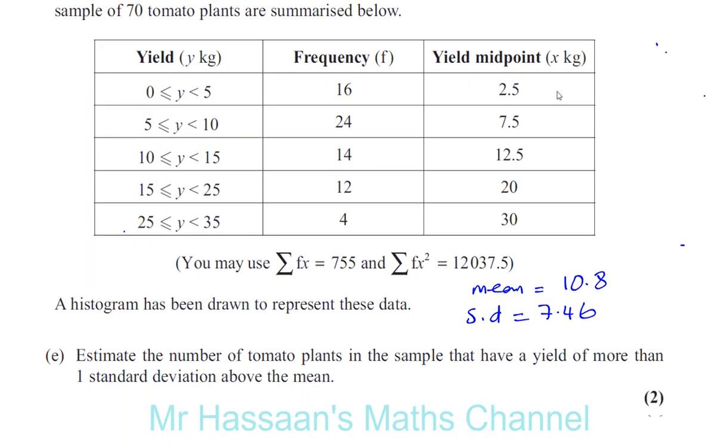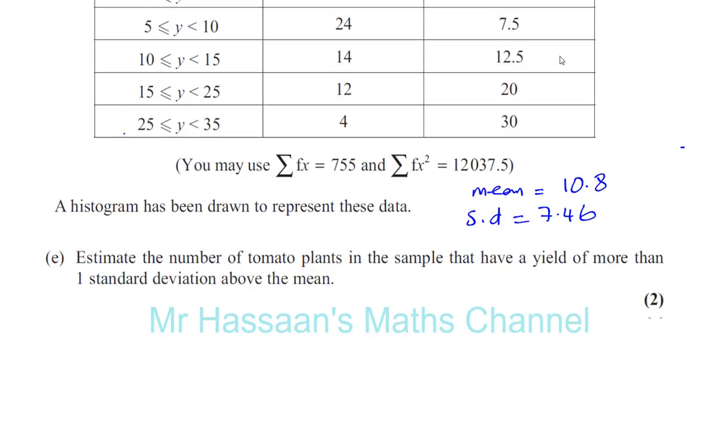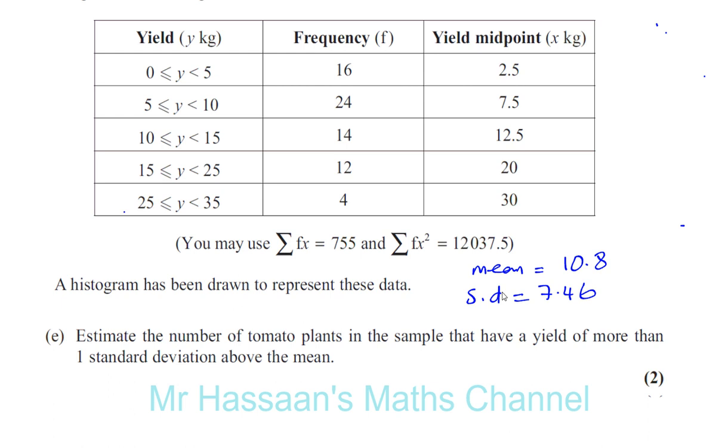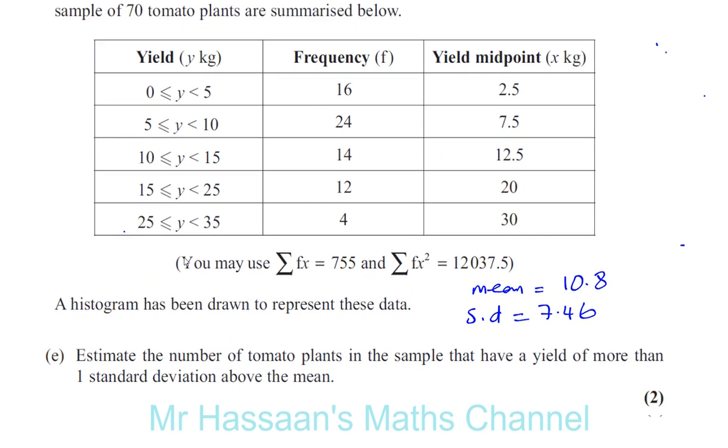This is part E. After the other parts have been done, we have the mean, 10.8 kilograms, and the standard deviation, 7.46 kilograms. The question asks you to estimate the number of tomato plants in the sample that have a yield of more than one standard deviation above the mean.